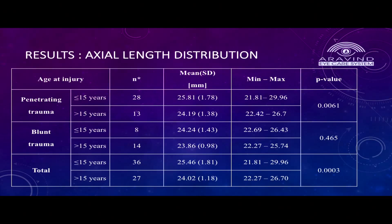Comparing axial length using age at injury: if the age at injury was less than 15 years, the axial length in penetrating was around 25.81 mm, whereas in blunt it was around 24.24 mm. This means that in both penetrating and blunt trauma, the younger the age, the greater the axial length elongation.